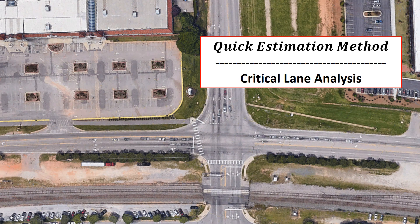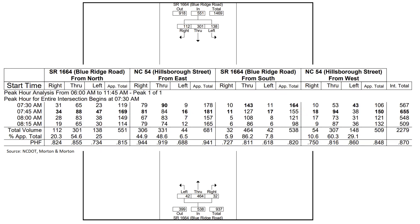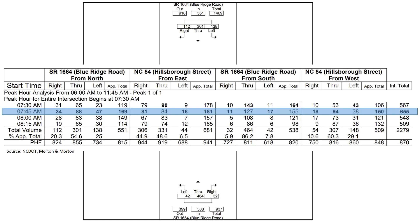This is the quick estimation method looking at critical lane analysis. We're going to look at a real intersection and perform the calculations for this quick estimation. We're looking at the intersection of Hillsborough Street and Blue Ridge Road. This is an image of the overall peak hour data. We're going to focus on the peak 15 minutes of this peak hour, which occurs at 7:45 a.m., and we see the right, through, and left movements for each approach to this four-leg intersection.